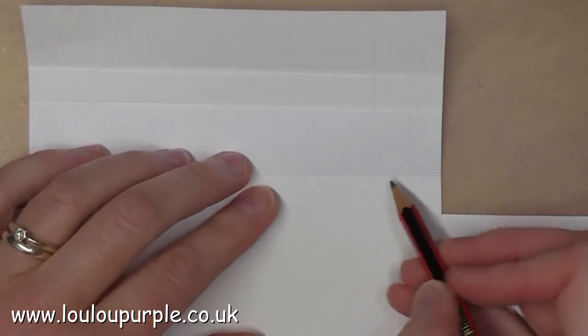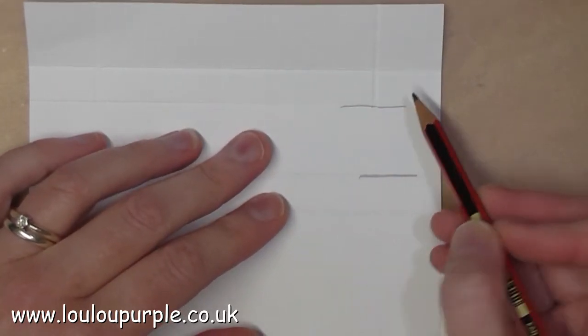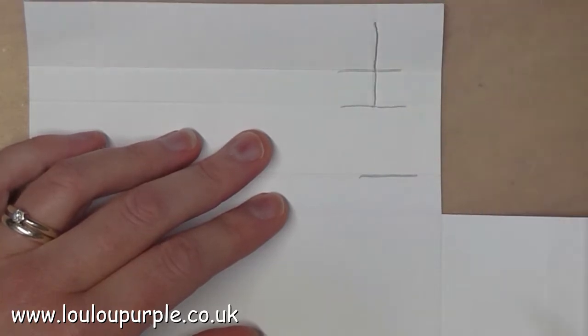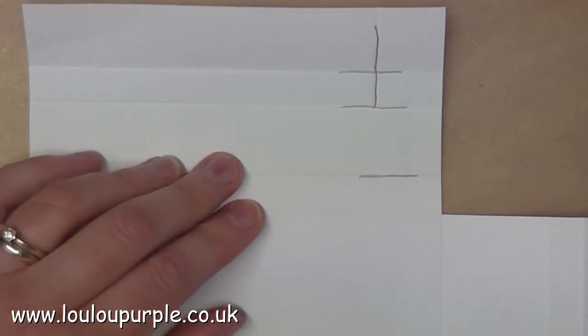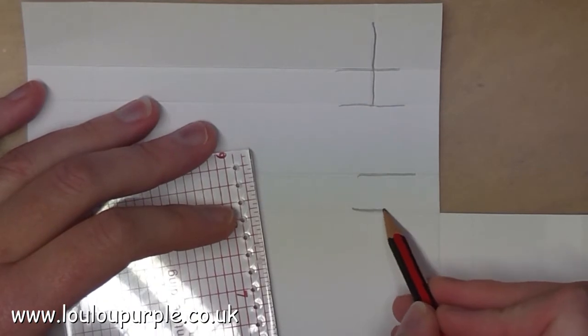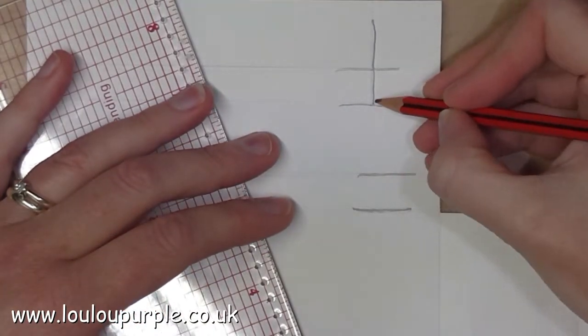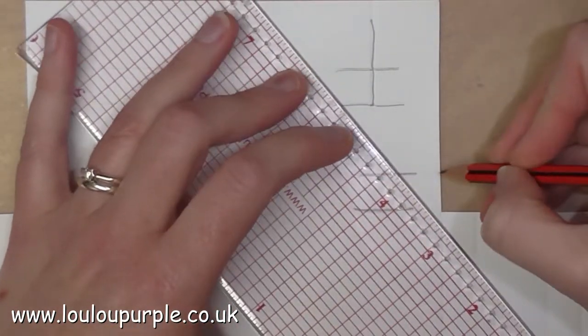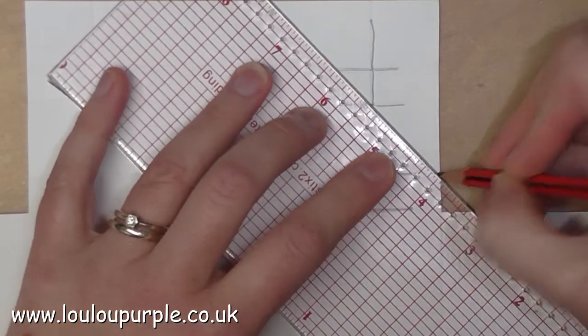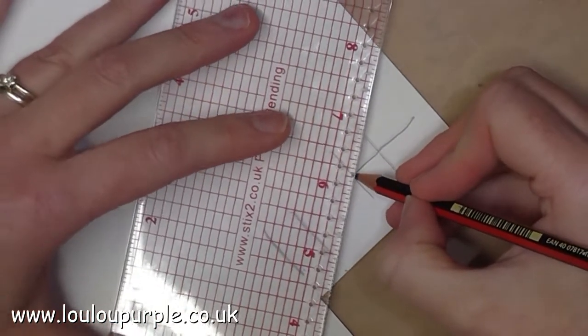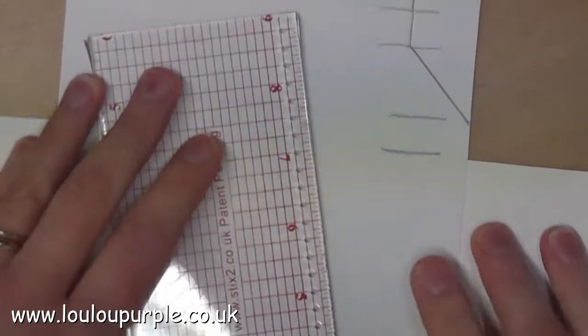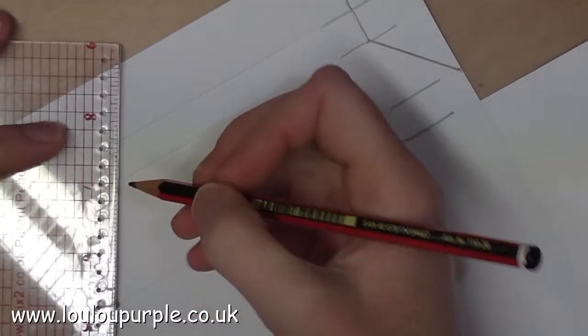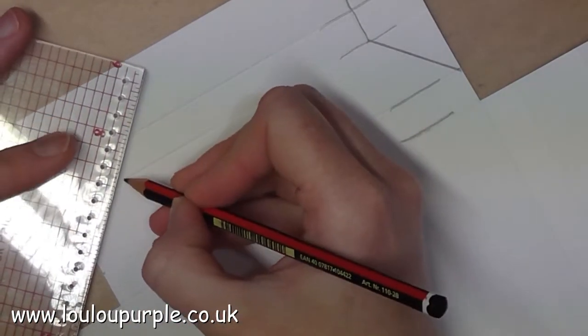We are now going to go back to the small score line that we made. I'm just drawing in the lines so that you can see where the creases are. Now we need to draw a line from the bottom of the small score line that we did one inch in, and we need to bring it down to the third score line down from the top of the paper. You then need to repeat this on the other three small score lines.